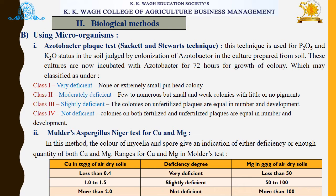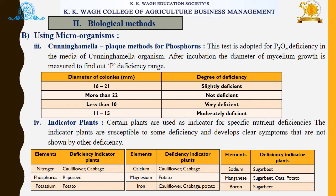Next is Mulder's Aspergillus niger test for copper and magnesium. In this method, the color of mycelia and spores gives an indication of either deficiency or adequate quantity of both copper and magnesium, with ranges given in a table. The Cunning-Amelapleic method is for phosphorus nutrient. This test is adopted for P₂O₅ deficiency using the Cunning-Amel organism. After incubation, the diameter of mycelium growth is measured to determine the phosphorus deficiency range, with the diameter of colonies and degree of deficiency given in a table.